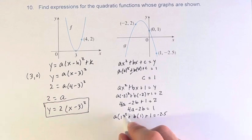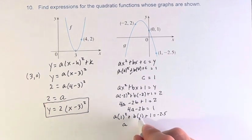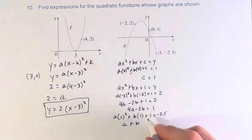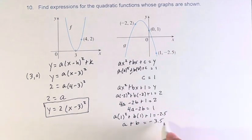a times 1 squared plus b times 1 plus 1 equals negative 2.5. a times 1 squared is just a, plus b times 1 is b, then subtract 1 from both sides, this cancels, and we get equals negative 3.5.